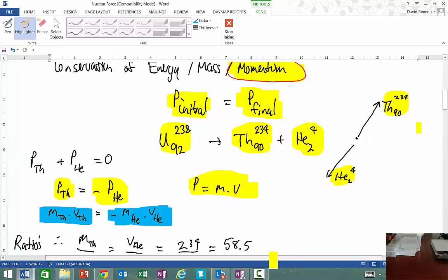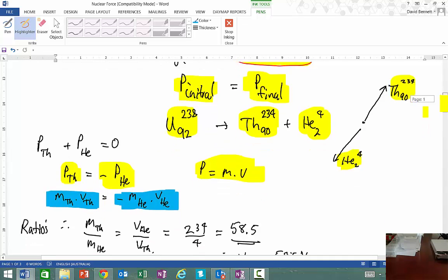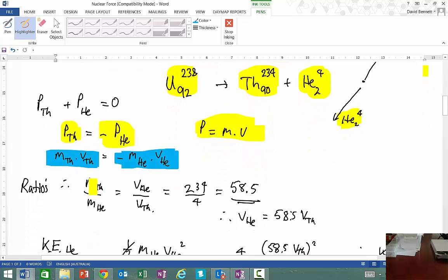If we're thinking about that, then the mass of the thorium and the mass of the helium should be equal to the velocity of the helium and the velocity of the thorium. That's the ratio when we actually do that multiplication. Now we know the mass of the thorium is in fact 234 compared to the mass of the helium, which is 4, which is a ratio of 58.5.